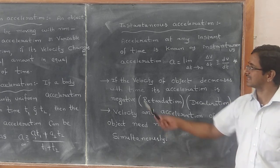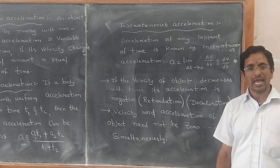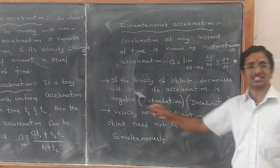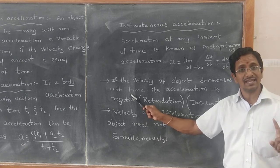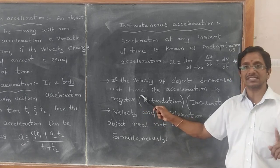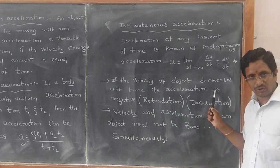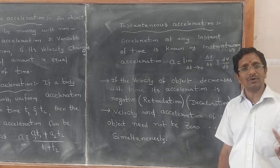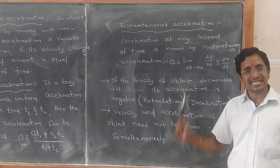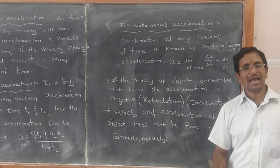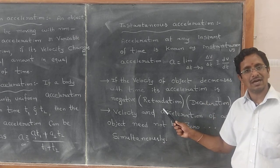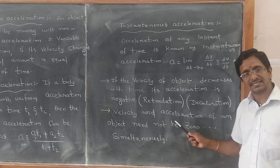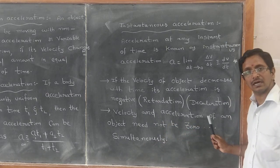Two important points I would like to write. Point one: if the velocity of an object decreases with time, the acceleration is known as negative acceleration. We call it negative acceleration, retardation, or deceleration. Point two: velocity and acceleration of an object need not be zero simultaneously.